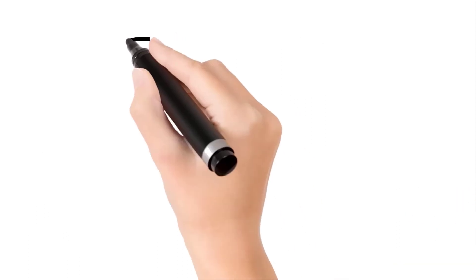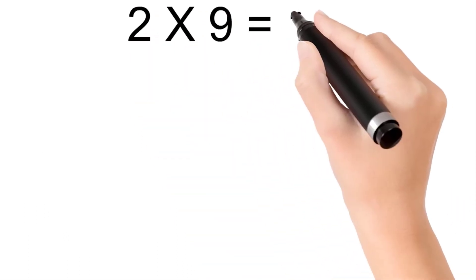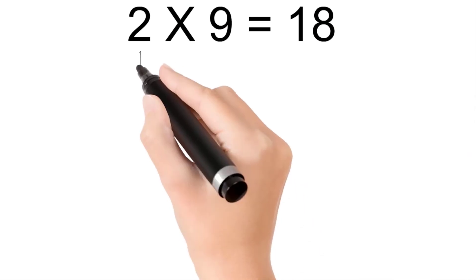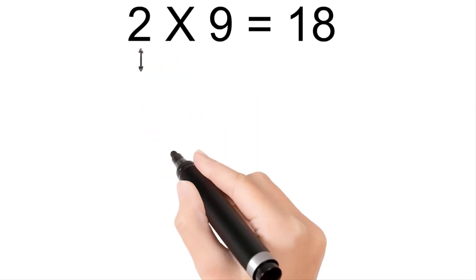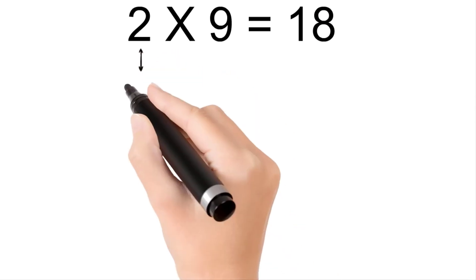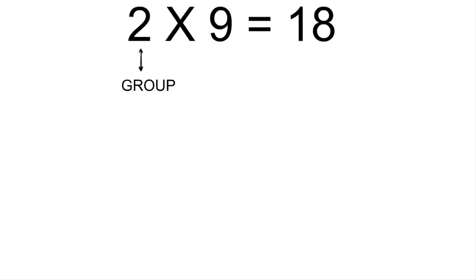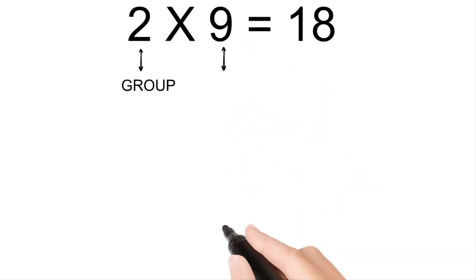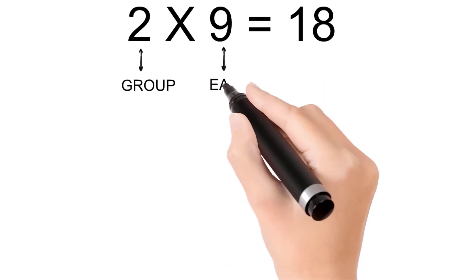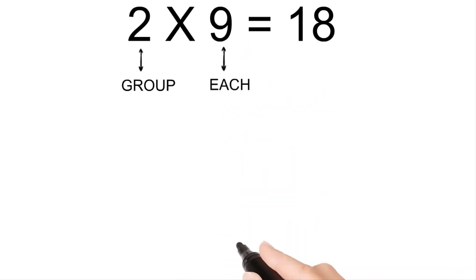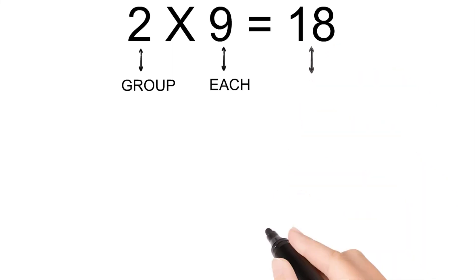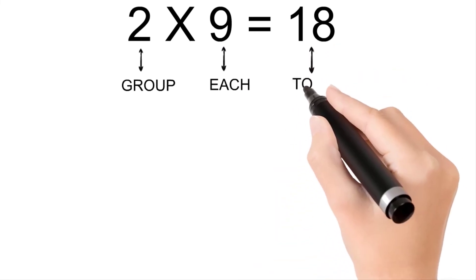Two times nine is eighteen. Two is a group, nine is each, and eighteen is total.